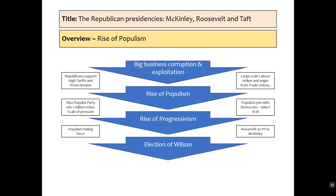As an overview of what we covered last video: we looked at the rise of populism, the big business corruption and exploitation of the 1890s, and how that leads people towards the support of populism. When populism really comes to fruition with the election of William Jennings Bryan as the Democrat nominee, although he loses the election, it demonstrates that populism is still a growing movement.